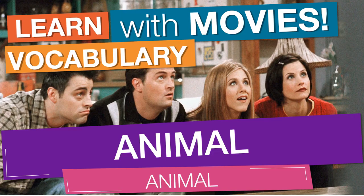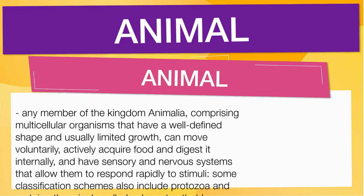In English vocabulary, we will learn the word 'animal.' It means any member of the kingdom Animalia, comprising multicellular organisms that have a well-defined shape and usually limited growth, can move voluntarily, actively acquire food and digest it internally, and have sensory and nervous systems that allow them to respond rapidly to stimuli. Some classification schemes also include protozoa and certain other single-celled eukaryotes that have motility and animal-like nutritional modes.